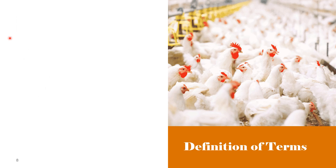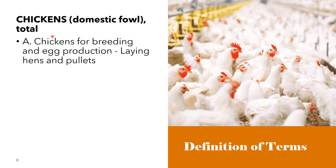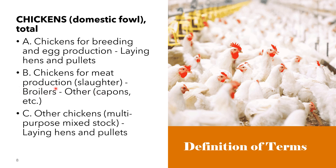In the classification of chickens and other domestic fowl, chickens for breeding and egg production are termed as laying hens and pullets. Chickens for meat production or slaughter are classified as broilers or capons. Other chickens — the multi-purpose mixed stock — are also classified as laying hens and pullets.